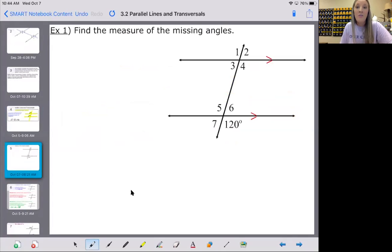It says find the measure of all the missing angles. We just learned about corresponding angles. Can you locate an angle that is corresponding with the 120? Hopefully you're thinking angle four. Angle four was corresponding and the lines are parallel, so we know these angles are congruent. This must be 120 degrees.